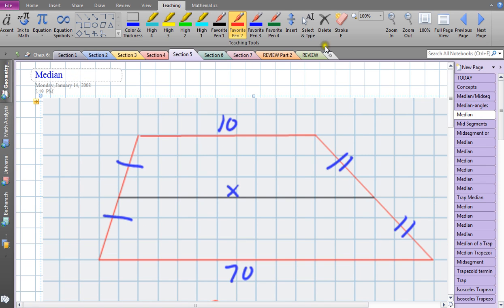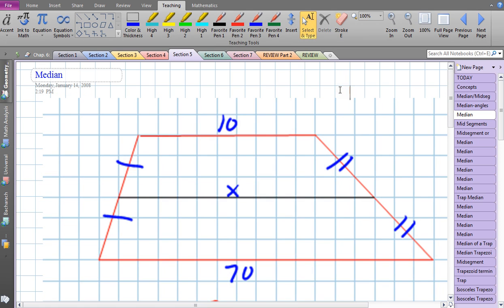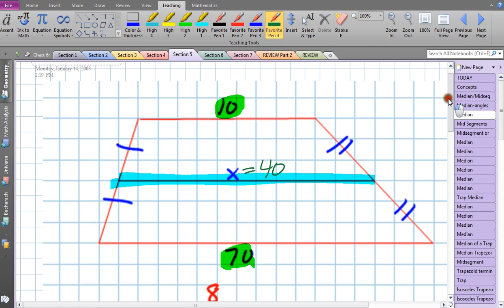We've got this problem here. This one's pretty straightforward. I can tell by all the tick marks that this is the median or mid-segment. When I add up these two numbers I get 80, therefore x has to be 40. That's a pretty straightforward problem, the numbers are real easy.